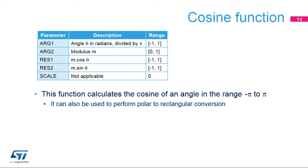This slide describes the features of the cosine function. The primary argument is the angle theta in radians; it must be divided by pi before programming arg1. The secondary argument, m, is the modulus. If m is greater than 1, a scaling must be applied in software to adapt it to the Q1.31 range of arg2. The primary result, res1, is the cosine of the angle multiplied by the modulus. The secondary result, res2, is the sine of the angle multiplied by the modulus.